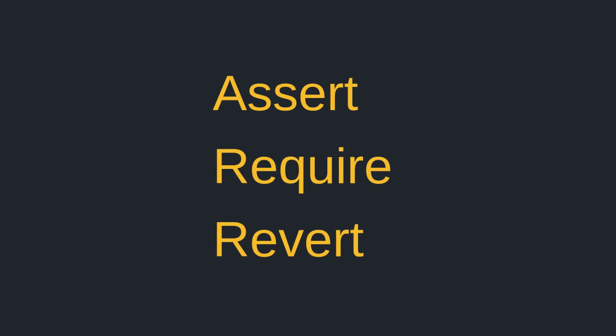Oftentimes you want your function to fail when something is not right. In Solidity, there are three ways to throw an error, which would stop the further execution of the function being called. The three ways to throw an error are Assert, Require, and Revert. In this video, we're going to go over how to use each of them and see how they are different from one another.